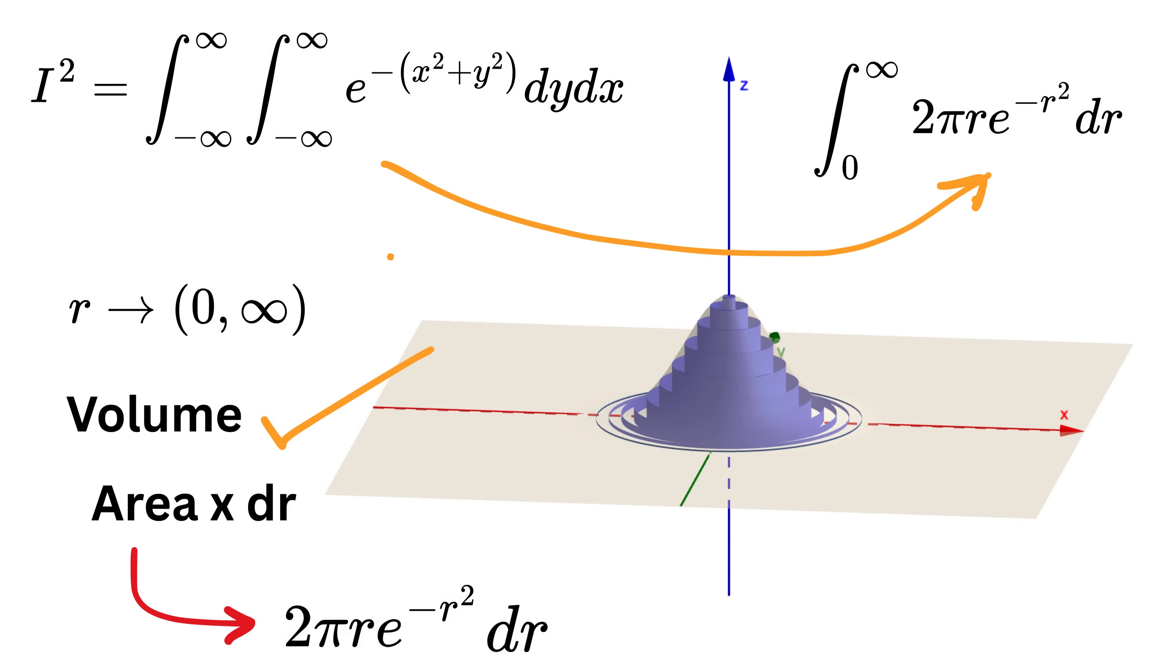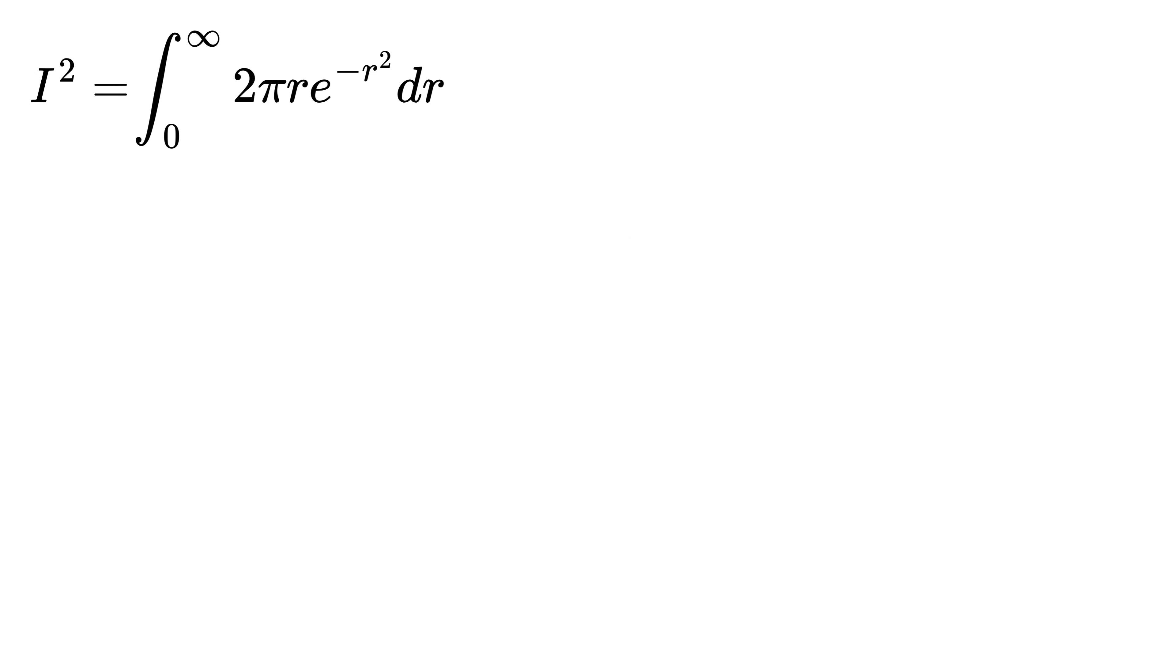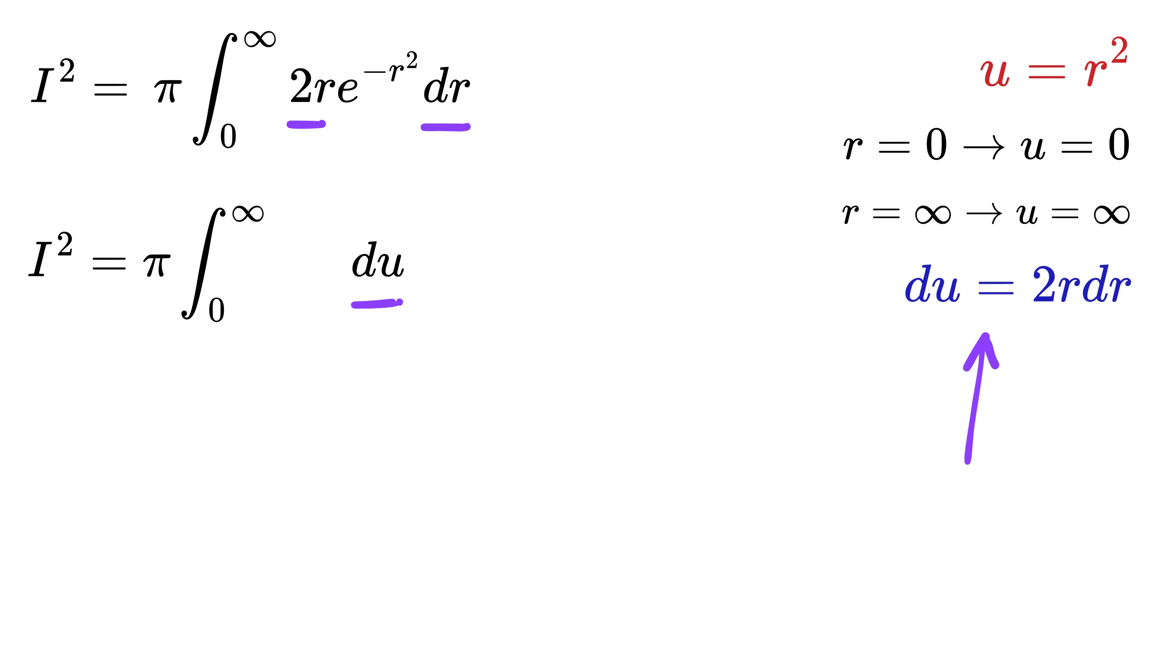Now, just integrate it from r equals zero to infinity. This is super easy. Take out pi since it's constant. Now let u equal r squared. So if r is zero, then u is zero, and if r is infinity, u will also be infinity. Also, du will be two r times dr. Now rewrite the integral using u. This two r times dr will become du, and this will be e raised to minus u. Integral e raised to minus u is minus of e raised to minus u, and put here zero and here infinity.